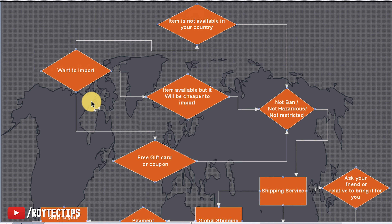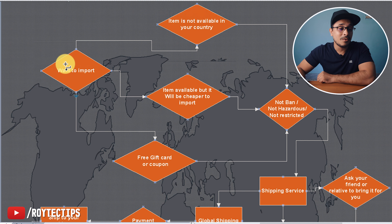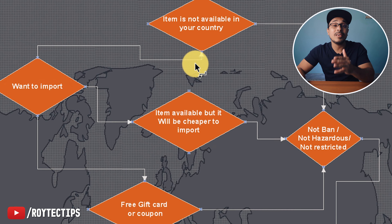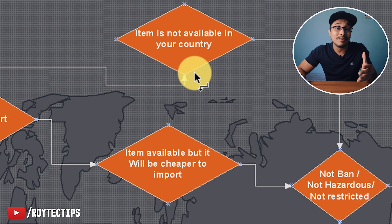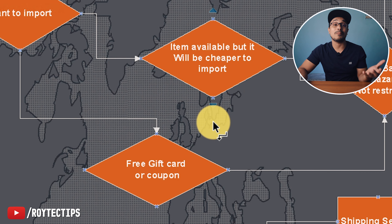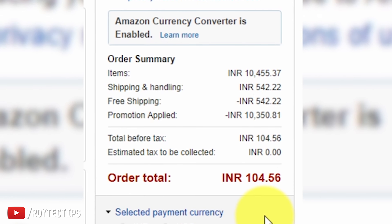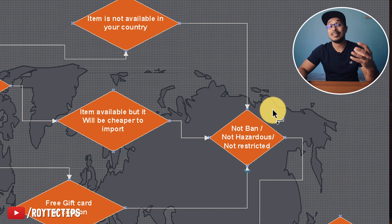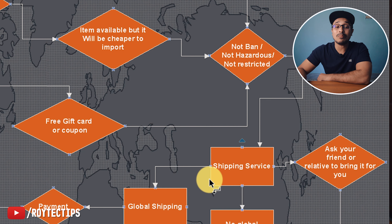For your better understanding, I designed a flowchart to explain all of this process. Here you can see: you want to import an item, and you have three options — the item is not available in your country, the item is too expensive in your country, or you have gift cards to redeem. After that, you need to check whether the item is banned, hazardous, or restricted. If it is, don't import it — don't waste your money. You can face fines and many problems. I assume you are importing something that is not restricted or banned, so then you move to the shipping portion.